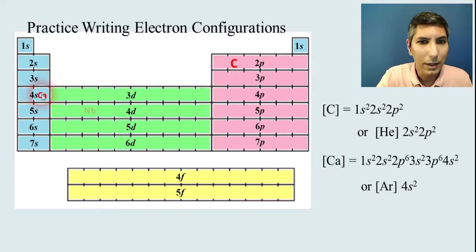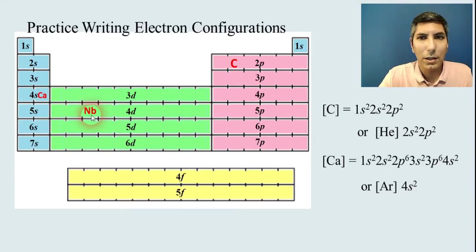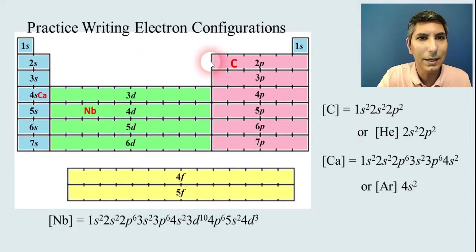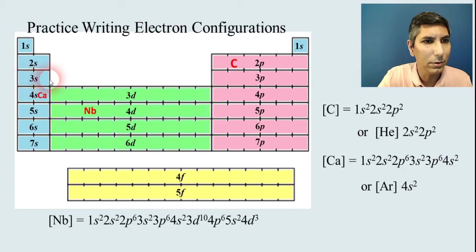Let's try this next one, niobium. So once again we start at the beginning. It's going to be 1s² and then 2s² 2p⁶, then 3s² 3p⁶.